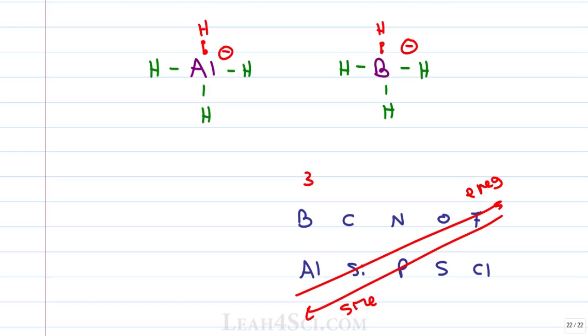Comparing boron to aluminum, boron is the more electronegative atom and aluminum is the larger and less electronegative atom.